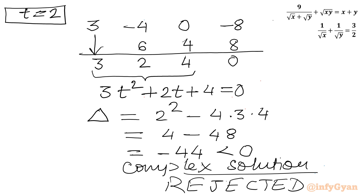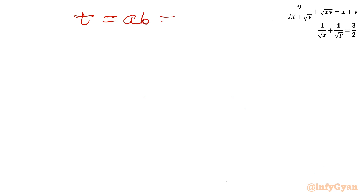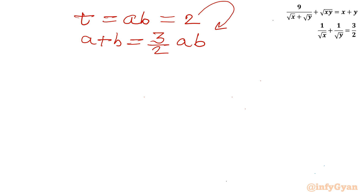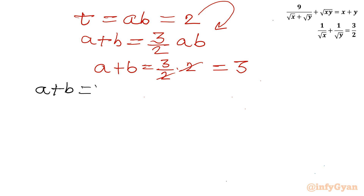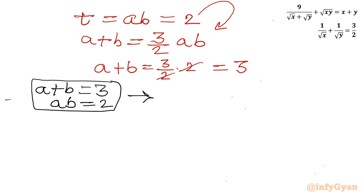We accept t = 2 as our solution. Since t = ab = 2, we substitute back into equation 2: a + b = (3/2)ab = (3/2)(2) = 3. So we have the system: sum of a and b is 3, and product of a and b is 2.